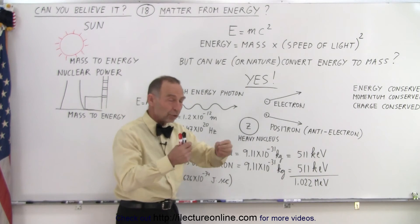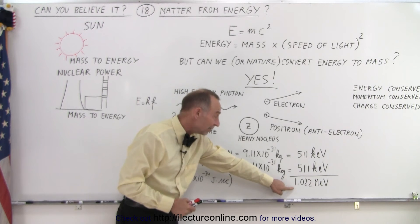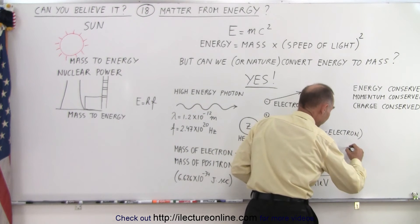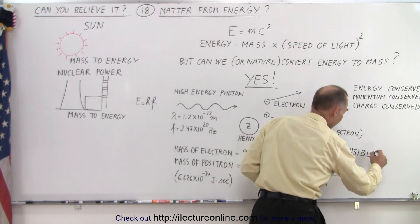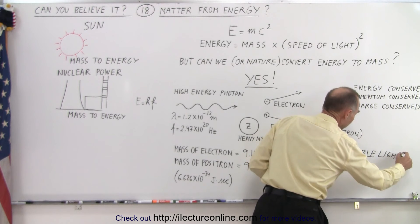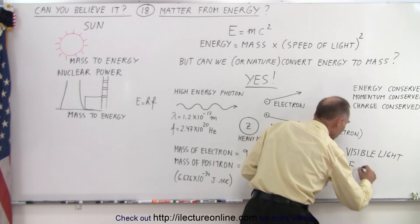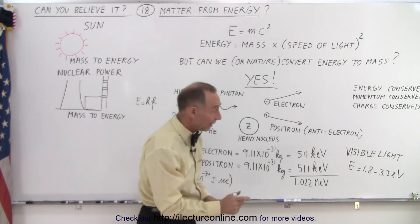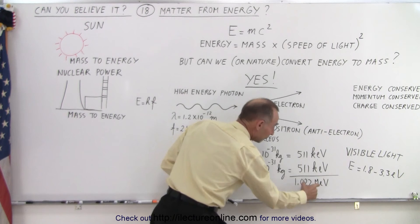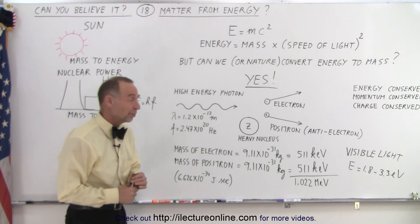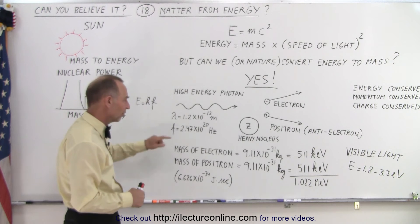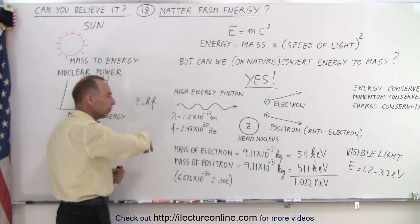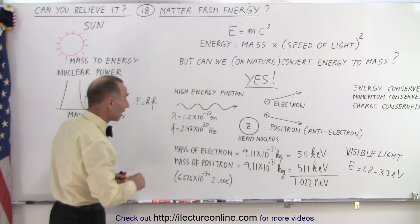Now, of course, you need twice as much, because you need to produce two particles, so you need to produce at least a little over 1 million electron volts. Now, for example, a photon of visible light, so a visible light photon, has energy somewhere between, let's say about 1.8 to about 3.3 electron volts. So a photon of visible light has about that much energy. We're talking about a photon that has almost a million times as much energy as the typical photon of visible light. So this is a very high energy photon. And the energy of a photon is equal to Planck's constant H times the frequency, how quickly it oscillates back and forth in a second.